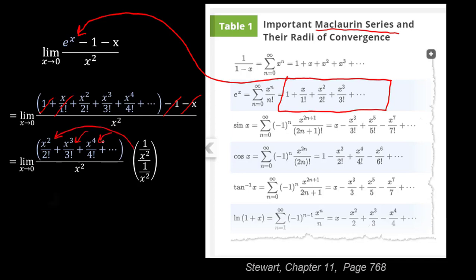And distributing that, that x squared on the top is going to cancel out. For the next term, we get x over three factorial, and the next term we get x squared over four factorial, and that x squared on the denominator gets canceled out into a one also.